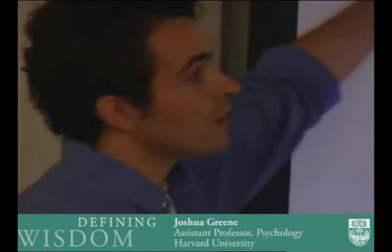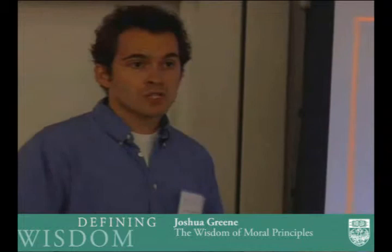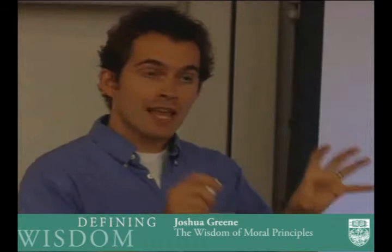So far I've been focusing on the question of where distinctions like these come from in our automatic intuitive moral judgments. Now I want to turn to the question of how we construct explicit moral principles and use those principles based on these kinds of distinctions. I'm going to highlight as a case study the means/side-effect distinction.